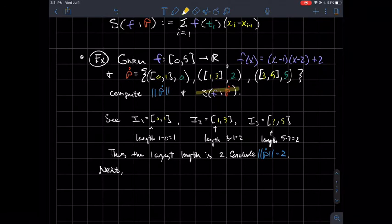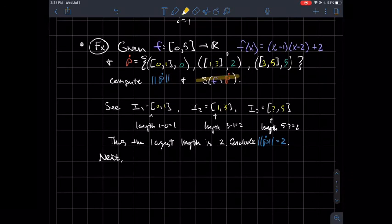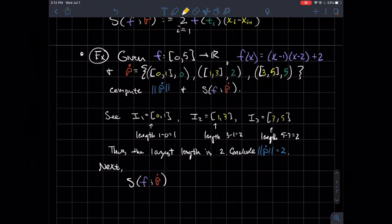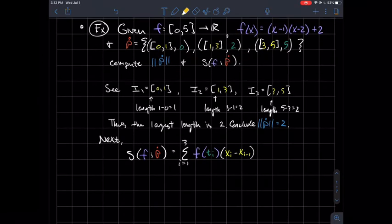The next thing we want to do is compute what is the actual value of the Riemann sum for this function (x-1)(x-2)+2 with respect to this partition. This is where the tags come into play. In the picture, you see that the tags kind of determine what you're going to plug into your function. So what would this be? I have 3 terms in my sum.